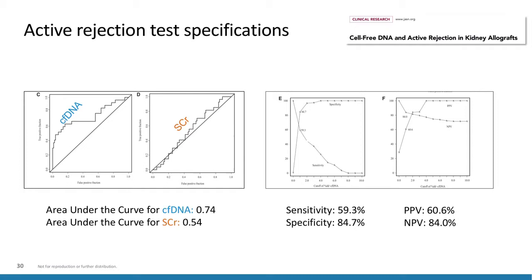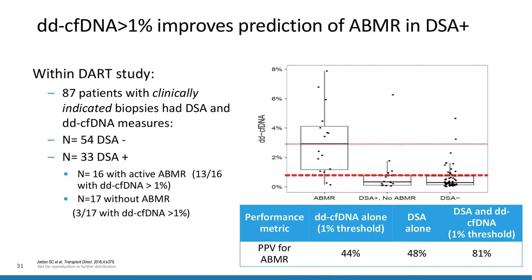They further refined results by looking at the combination of DSA and donor-derived cell-free DNA. Specifically for ABMR, the PPV for donor-derived cell-free DNA alone was 44%; for DSA alone, 48%; but if both were positive, the PPV rose to 81% — a very significant improvement.